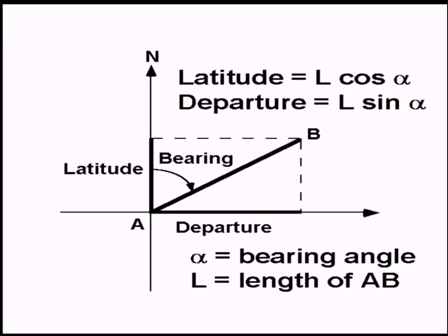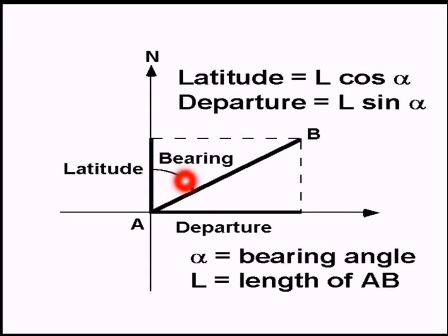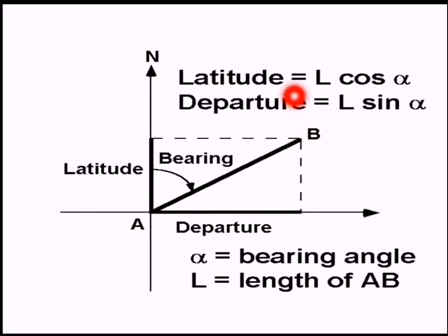In this figure we can see the north direction. This angle is the bearing — the angle between the north direction and line AB. The latitude of line AB is measured in the north-south direction and equals L·cosα, and the departure is measured in the east-west direction and equals L·sinα, where α is the bearing.